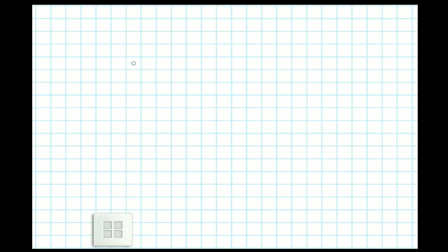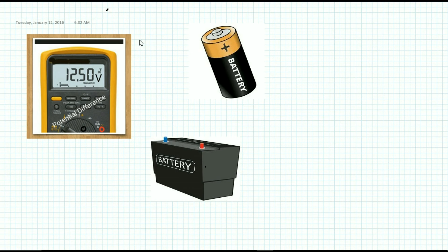The practical way of understanding the potential difference between two points is very interesting. In our day to day life we see these types of source equipment. This is a lead acid battery and this is a battery which we use in our torch. And this is a simple multimeter. We use multimeter to measure the potential difference.